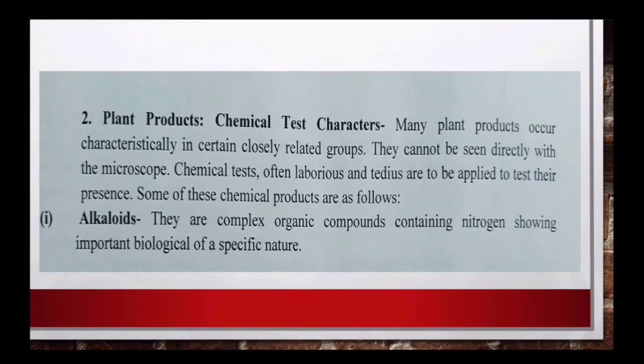इसके अलावा कुछ plant products हैं जो chemical test के आधार पर बताए जा सकते हैं, उनको microscope से नहीं देख सकते। तो इसके लिए chemical tests किये जाते हैं। ये chemical products alkaloids भी हो सकते हैं, cyanogenetic glycosides भी हो सकते हैं, phenolic compounds हो सकते हैं, fats, oils हो सकते हैं, amino acids हो सकते हैं।